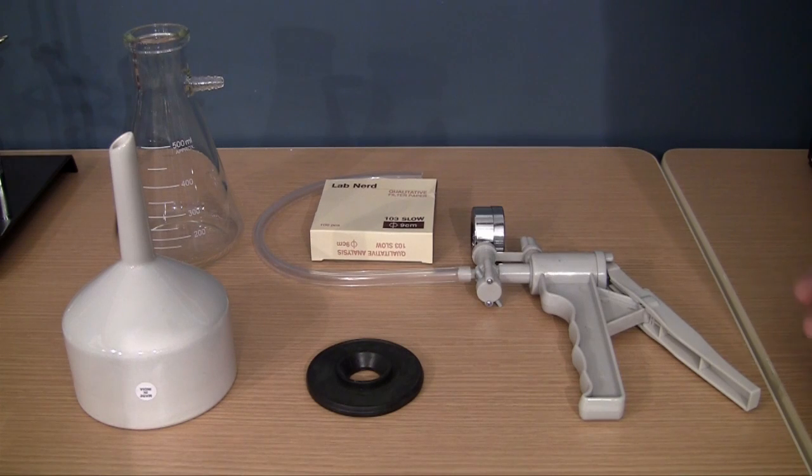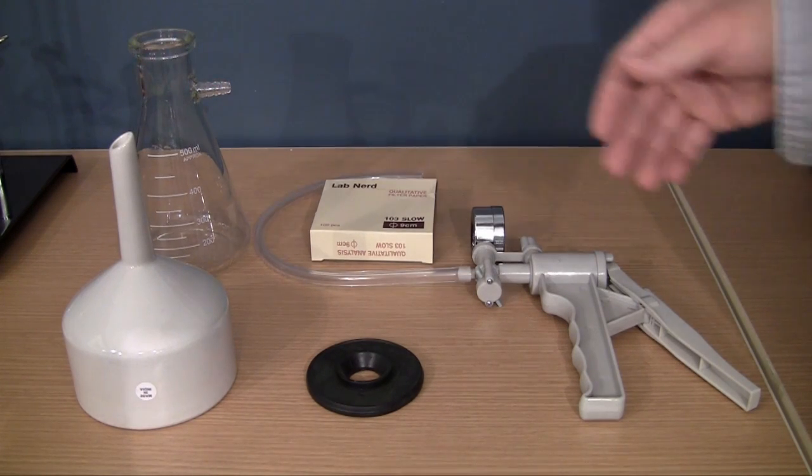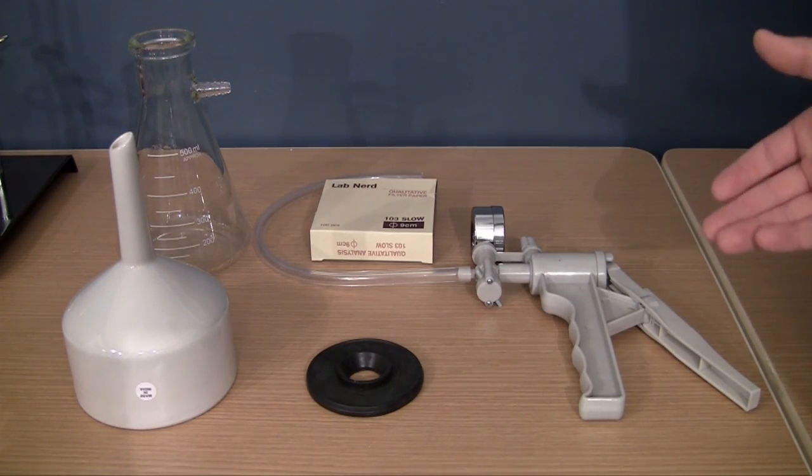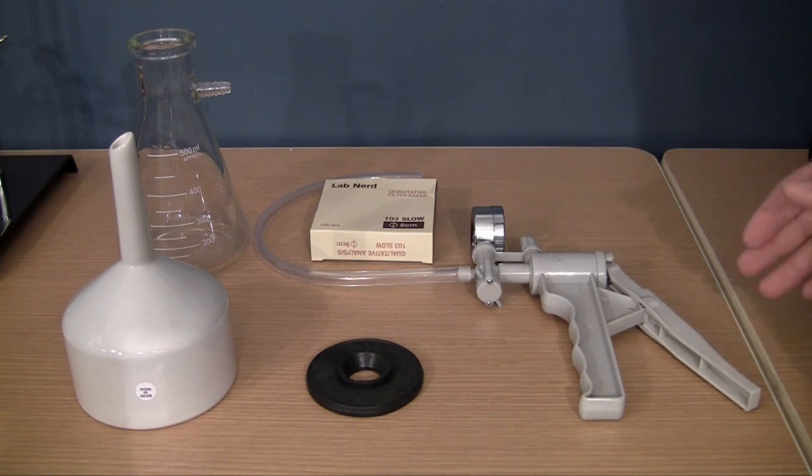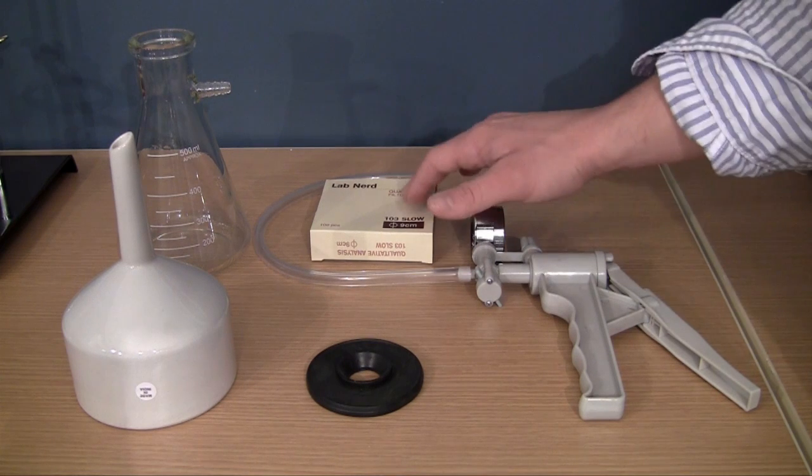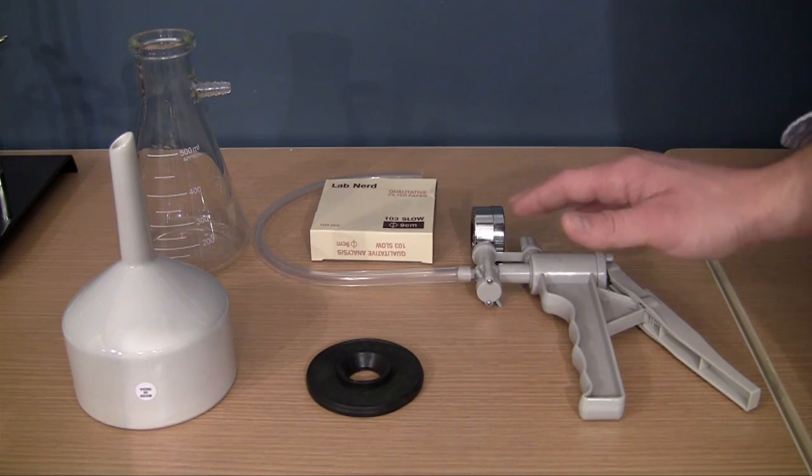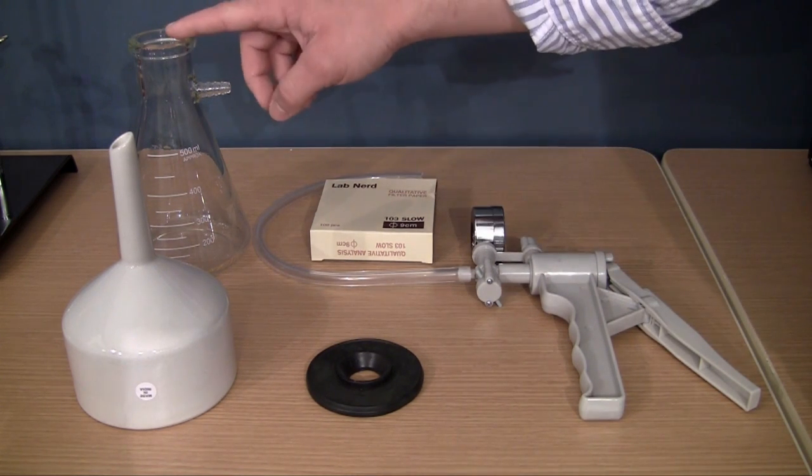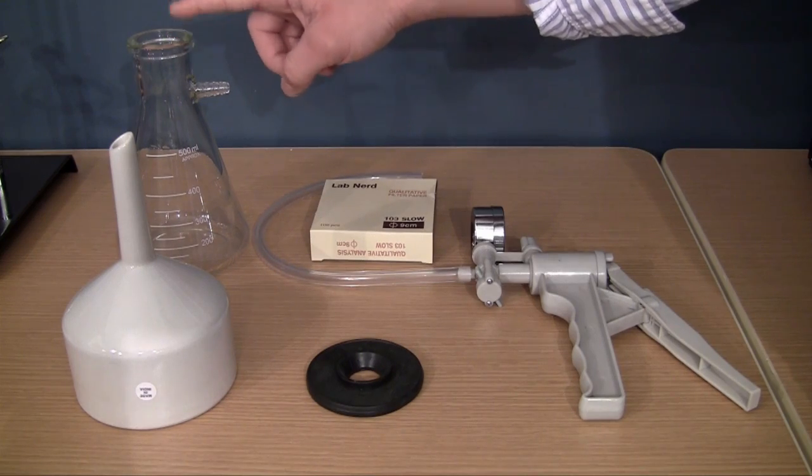Now in order to use a filtering flask right here, you actually need more than just the filtering flask. You need a whole bunch of stuff, and this stuff is actually usually sold in a kit. I got all of these as one kit, including the paper, so let me go ahead and go through the pieces right now. Of course, I already talked to you guys about the filtering flask itself.